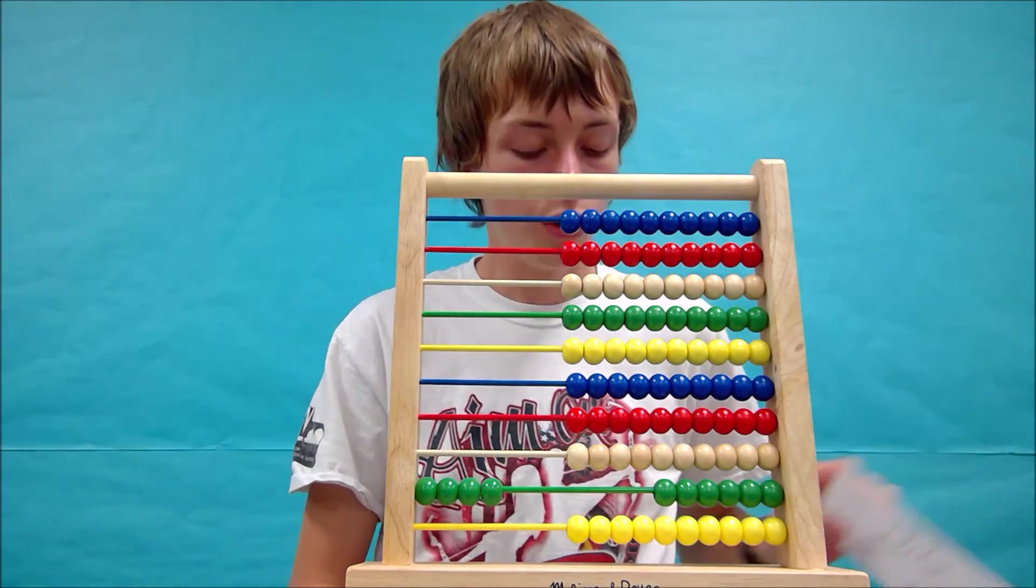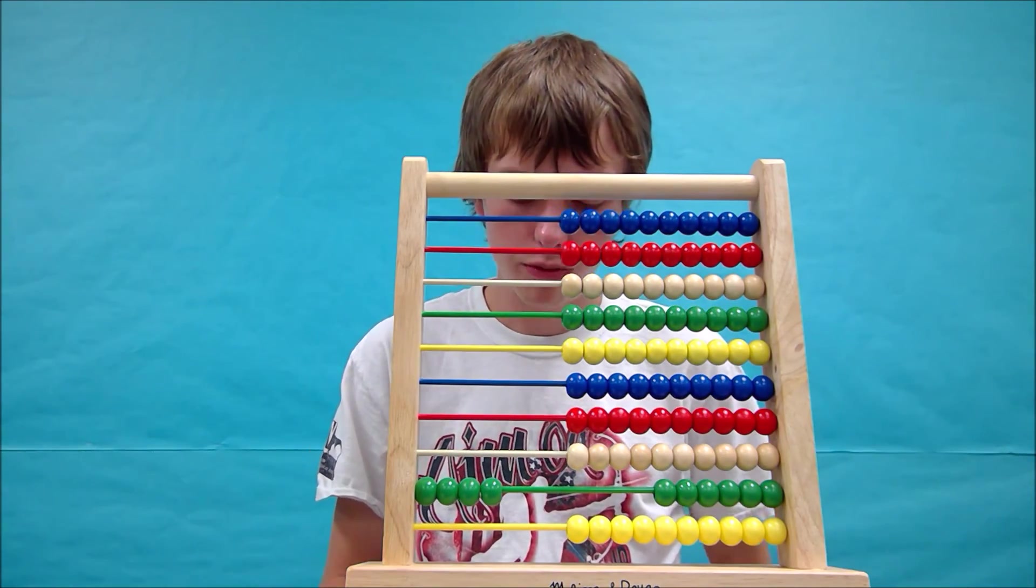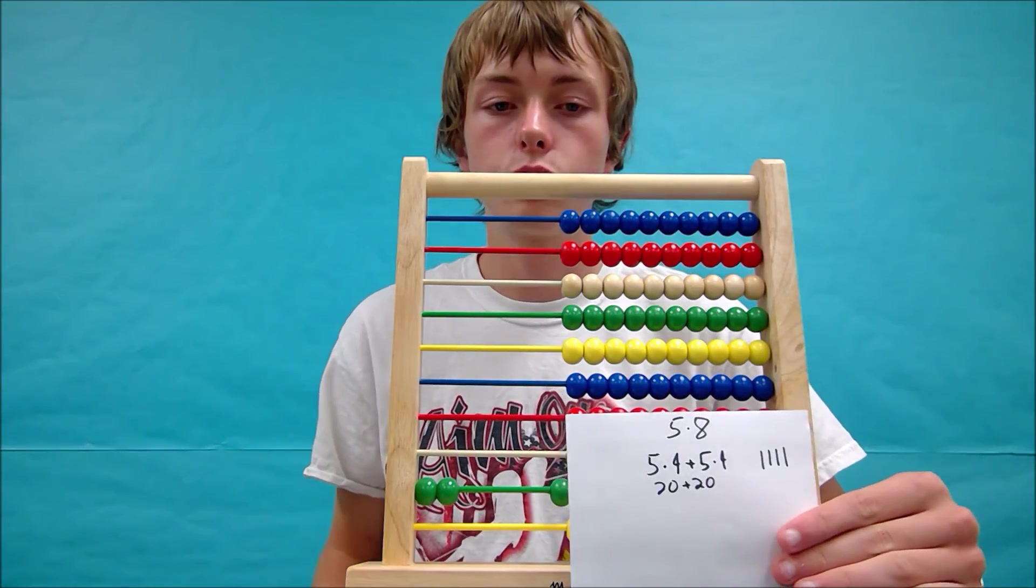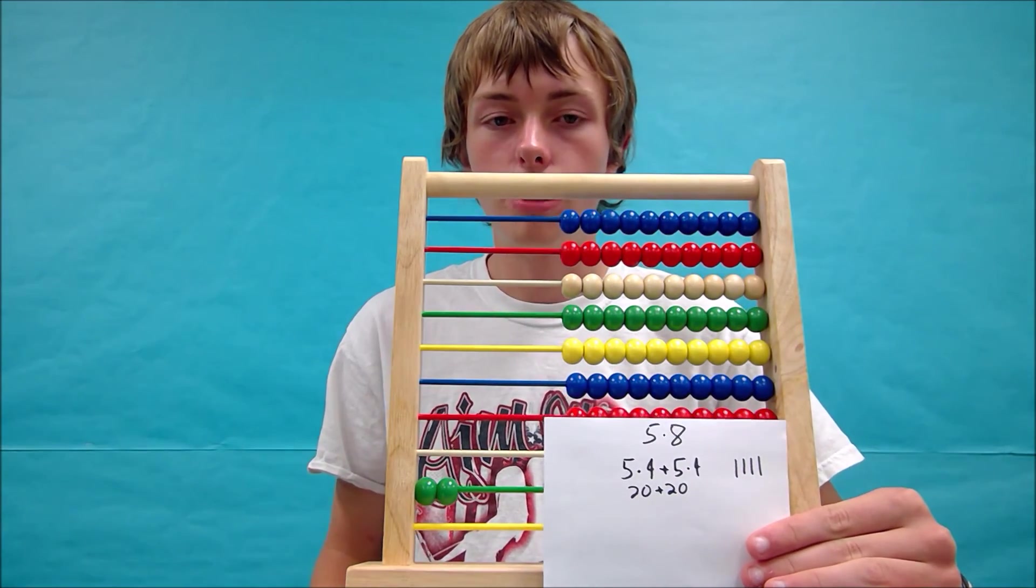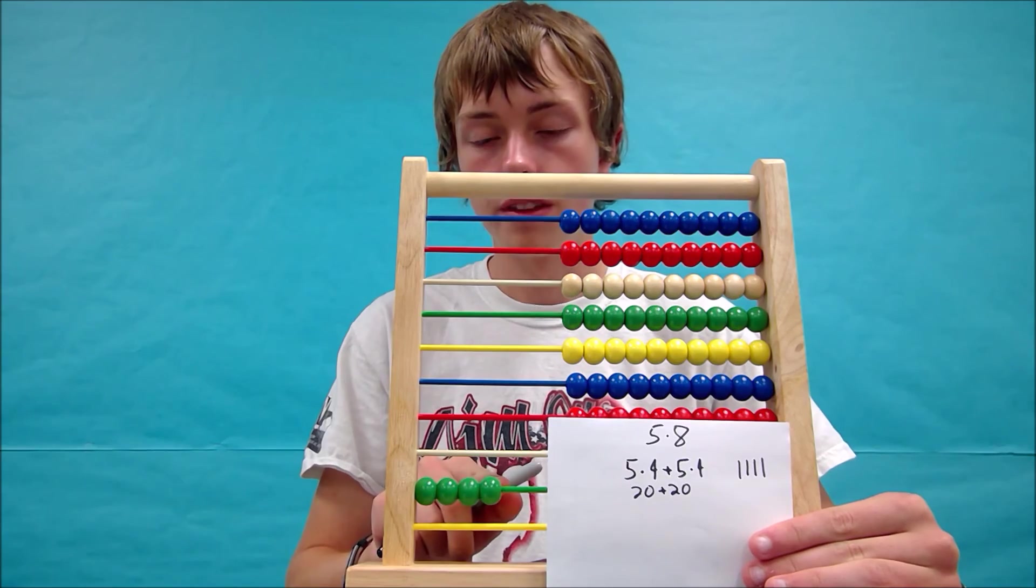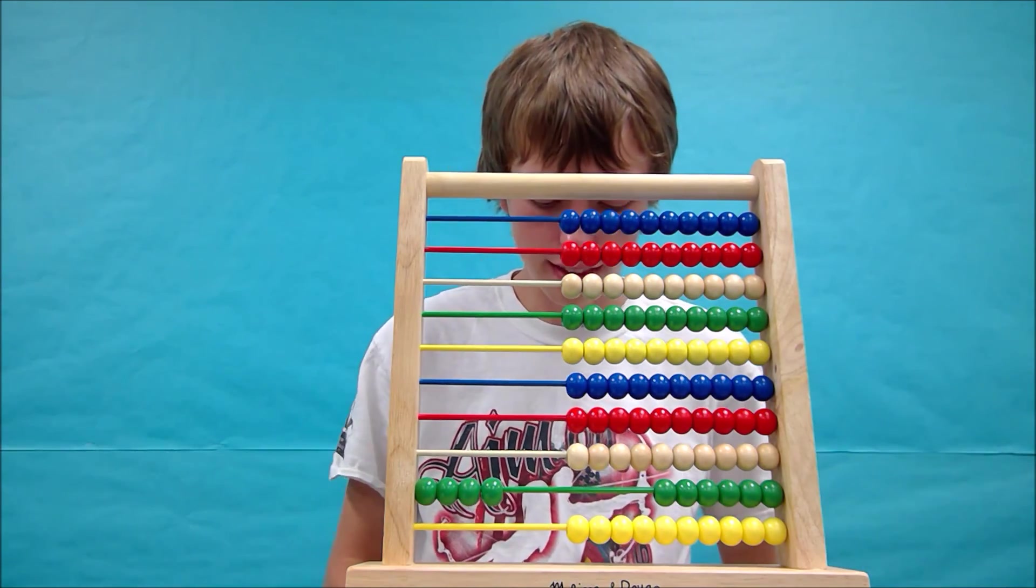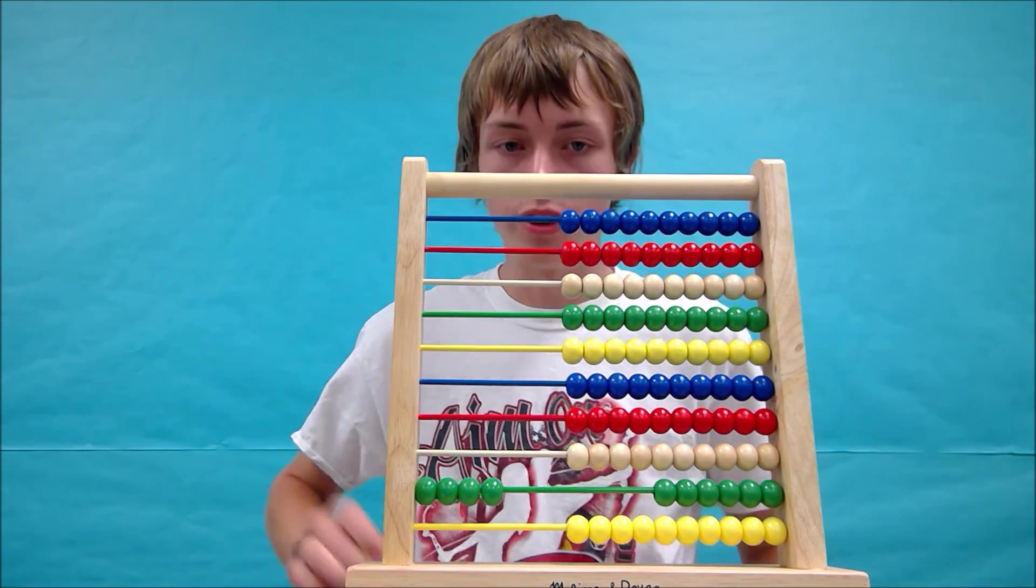Because we have 5 times 4, because we were halfway there this way. And if we double this answer, we know that we're all the way there, which again is 40.